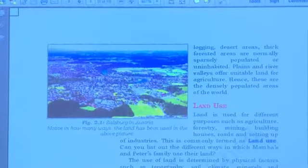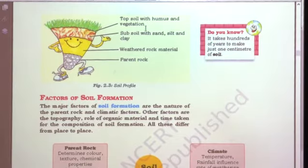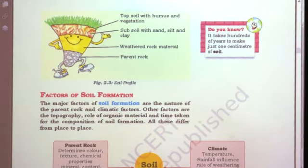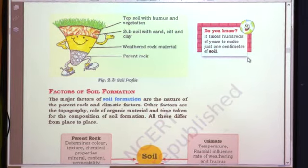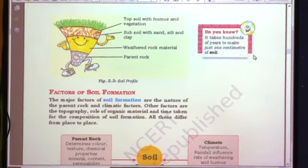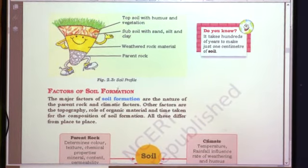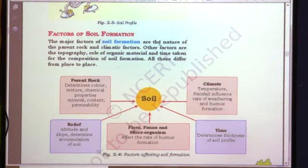On page 11, we study the factors of soil formation. The diagram shows: top soil with humus and vegetation, rock material which is weathered, and the parent rock below. This parent rock converts into soil useful for natural vegetation and human life. It takes hundreds of years to make just 1 centimeter of soil. The major factors of soil formation are the nature of the parent rock and climate.